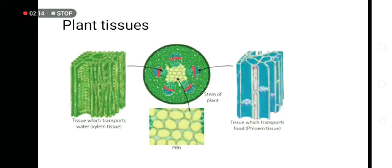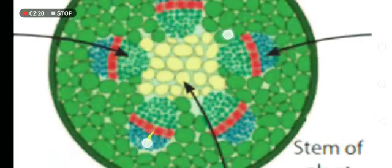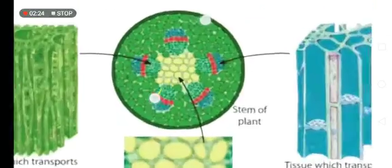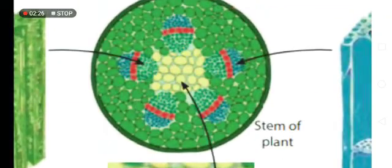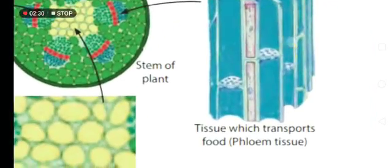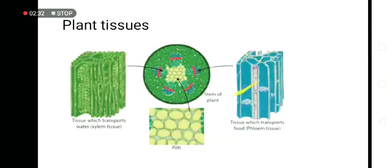Plant tissues, tissues which transport water. These tissues transport water. That's the stem of the plant right there. This is called pith. Have you seen when you break a stem there will be small dots? That's what it is. Tissue. It transports food. You know that plants transport foods and everything.